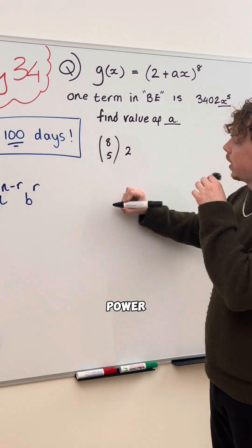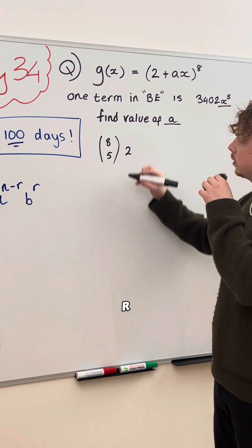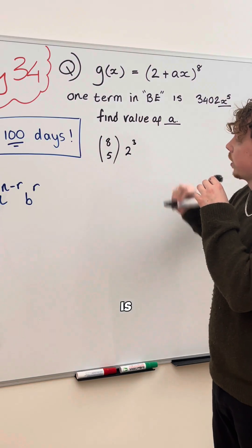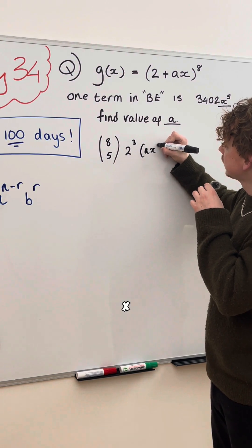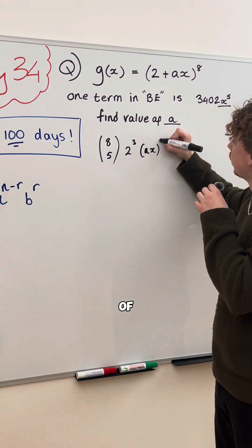So, A is 2 to the power of n minus R, 8 minus 5, which is 3. Then we have B, which is A x to the power of 5.